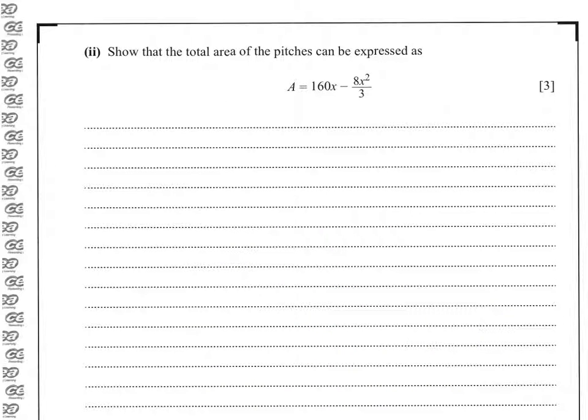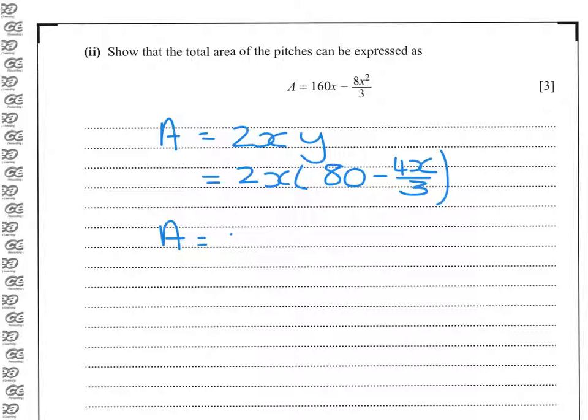So the area of one pitch is x times y. We have two pitches, so that's 2 times x times y. And we have just shown that y is 80 minus 4x over 3, which means that the area is 160x minus 8x squared over 3.